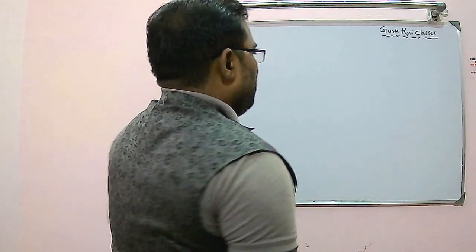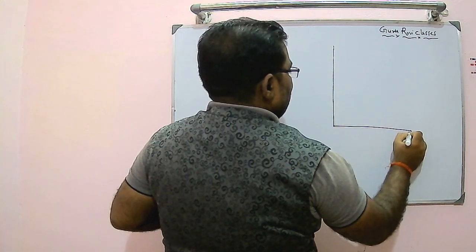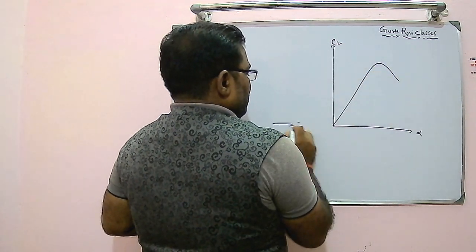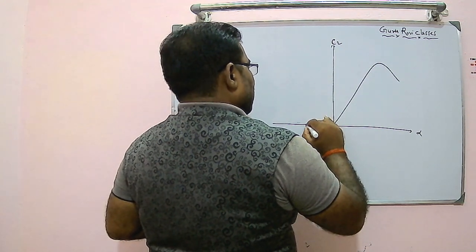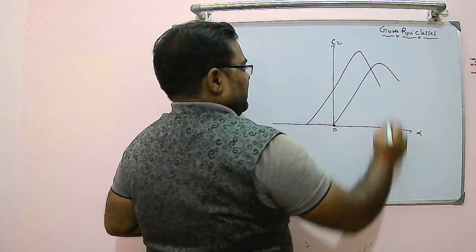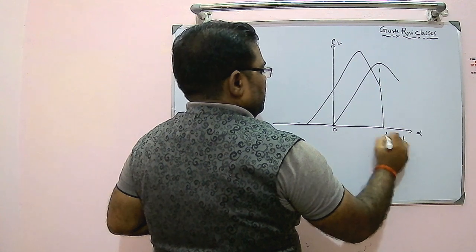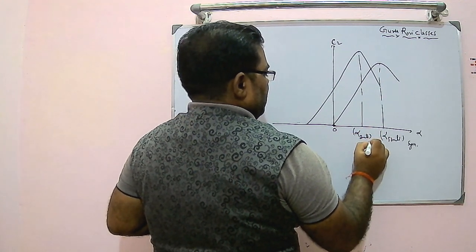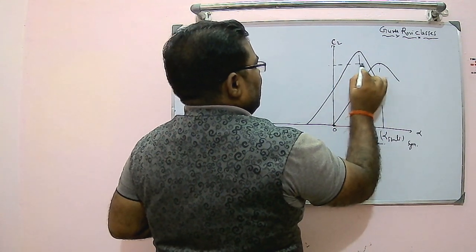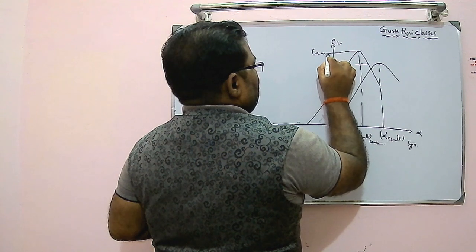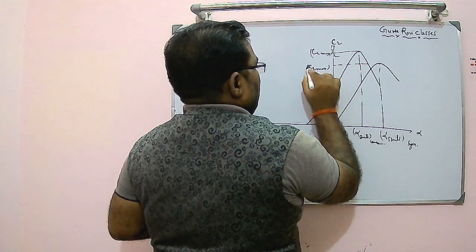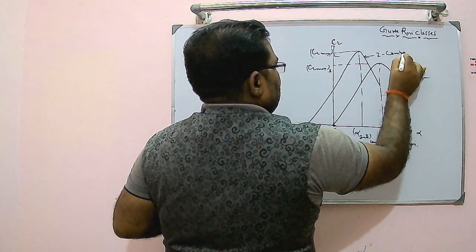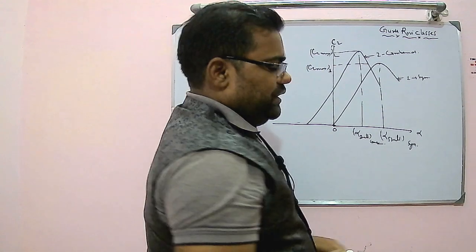Now, drawing C_L versus alpha: for a symmetrical airfoil, the C_L vs. alpha curve starts from zero. For an unsymmetrical or cambered airfoil, it does not start from zero — it starts from the negative side and goes higher with a higher C_L max. So C_L max for the cambered airfoil is higher. The stall angle, alpha stall, occurs at a certain point for the symmetrical airfoil, while for the cambered airfoil the stall point is different.